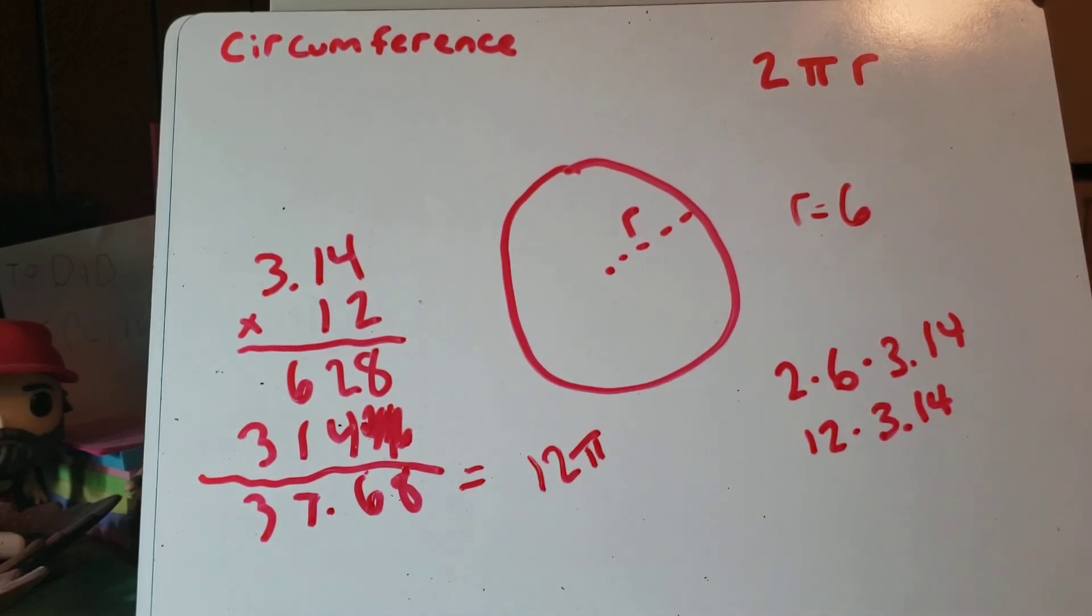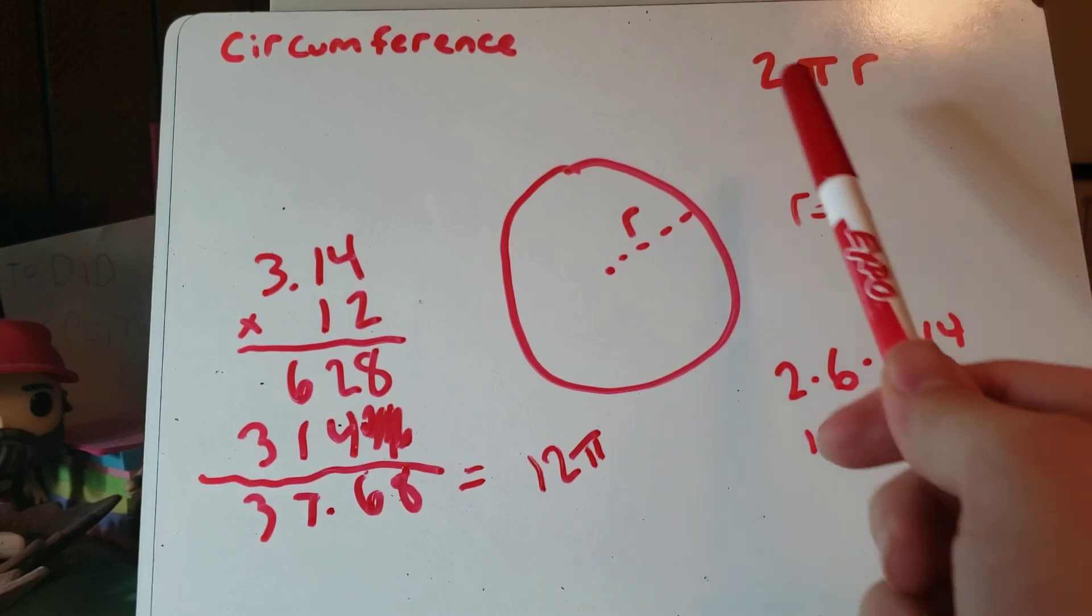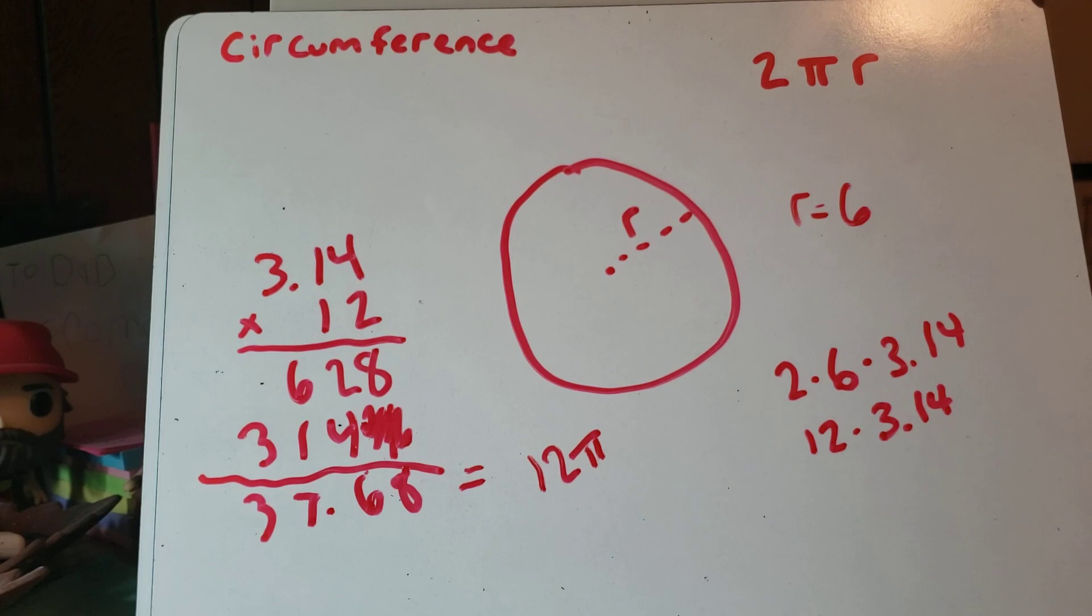But both of them are acceptable answers. Thanks for learning about perimeter and circumference. Remember perimeter and circumference is just a measurement of the outside of a shape. So for a circle, that involves using this formula right here: 2 times pi times r. And for perimeter, it's just adding up the lengths of the sides. Thank you so much for watching. And next time we'll talk about area. Bye.